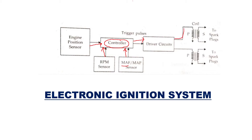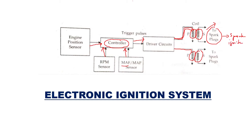The driver circuit introduces a current in the primary of the transformer. When that high current is interrupted by the driver circuit, it produces a high voltage in the secondary. This high voltage from the secondary is applied to the spark plugs, and then the spark plugs produce a spark.